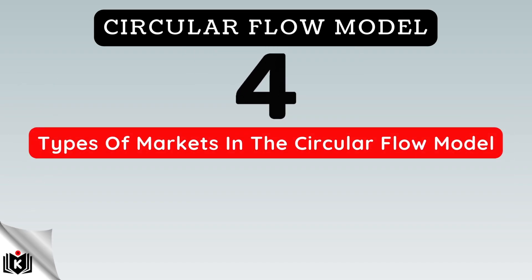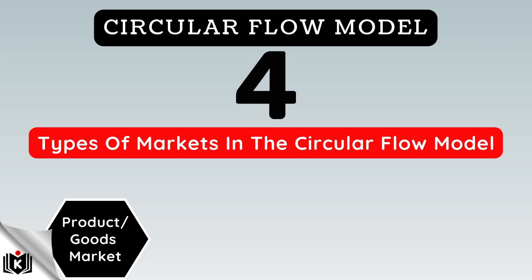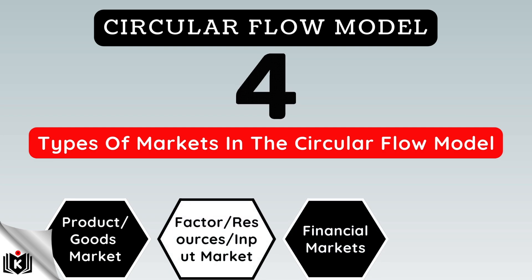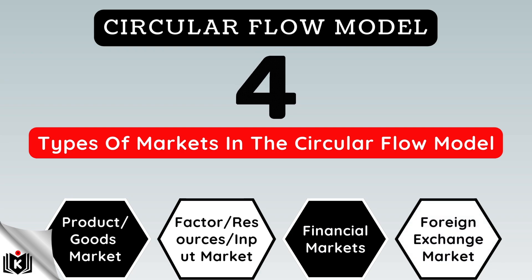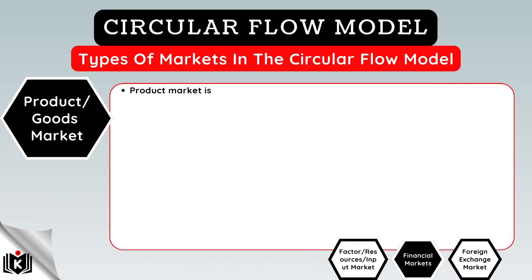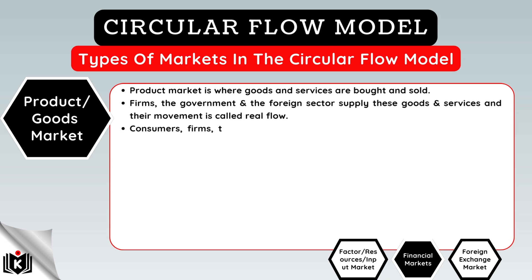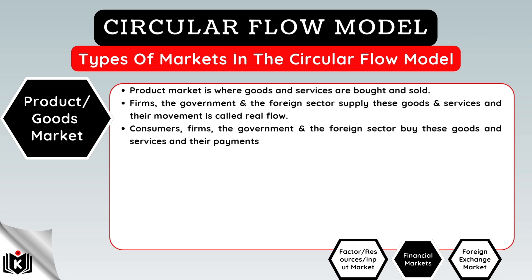In addition to the above participants, there are also several key types of markets within the circular flow, which includes the product or goods market, the factor/resources or input market, the financial markets, and the foreign exchange market. The product market is where goods and services are bought and sold. Firms, the government, and the foreign sector supply these goods and services, and their movement is called real flow. Consumers, firms, the government, and the foreign sector buy these goods and services, and their payments represent money flow.